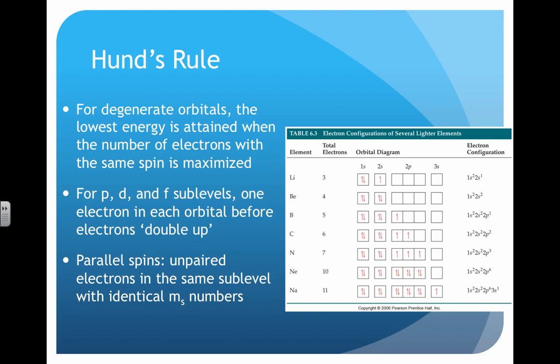Notice in the figure on the right that for carbon, nitrogen, and beryllium, where you have parallel spins, you can see the application of Hund's rule in the arrow diagrams.